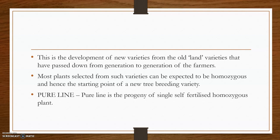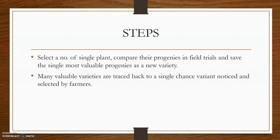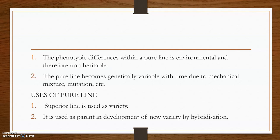A pure line is the progeny of a single self-fertilized homozygous plant. In the procedure, during the first year, individual plants are selected from a heterogeneous population, with the number of plants selected varying from 200 to 1000 in various crops.